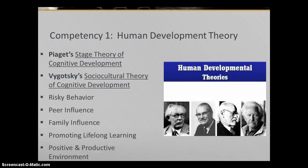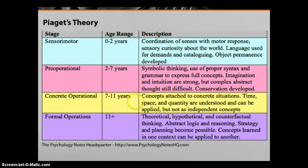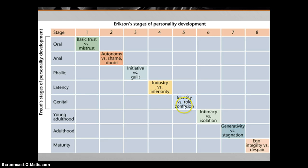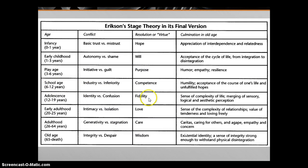Moving to instruction and assessment — when we look at human development theory, Piaget's and Vygotsky's theories, we look at risky behavior, peer influence, family influence, promoting lifelong learning, and a positive and productive environment. These students are not in a positive environment, and their families sometimes hinder them from learning. In one scene, the mother tells her daughter that men don't like intelligent women. These students are supposed to be at the formal operational level, but some are still in the concrete operational. Most are at the identity versus role confusion stage of Erikson's stages of personality development, and if some of those earlier stages haven't been resolved, they're still working on it — working on fidelity due to that identity conflict.